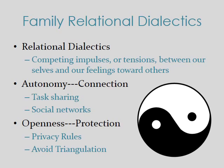We've already talked about relational dialectics in chapter 2, especially when we discuss things such as extra- and introversion and the way your energy is used, which has a close relationship to your dialectical tendencies. Two specific dialectics are important that we'll discuss today: autonomy and connection, and openness and protection. But first, let's talk about what a relational dialectic is.